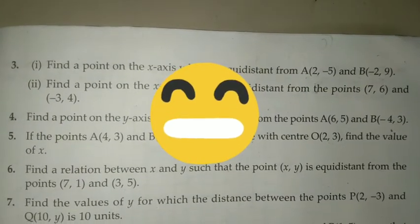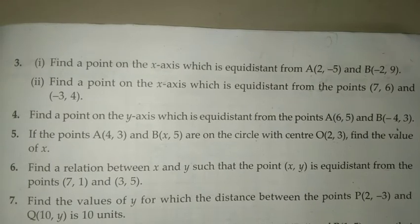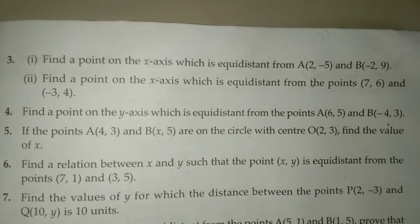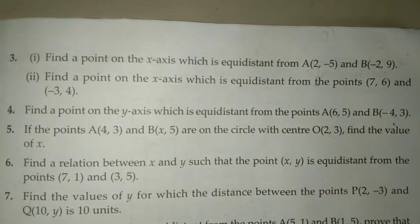Hello everyone! Let's continue with question number 3, sub number 1. Here the question says, find a point on the x-axis which is equidistant from A(2, -5) and B(-2, 9).